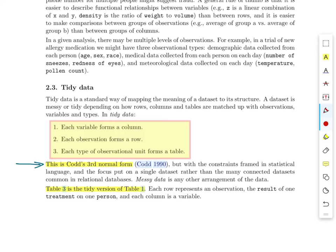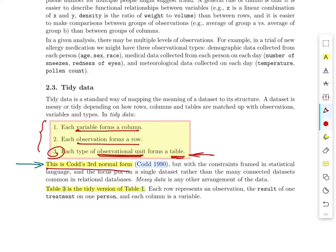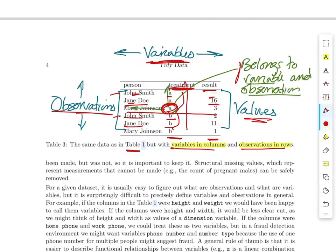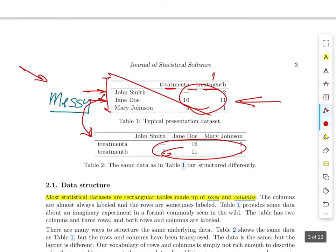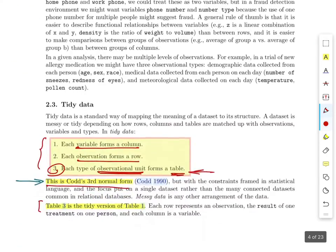Here are the three criteria Wickham defines to make tidy data: first, each variable forms a column; second, each observation forms a row; and third, each type of observational unit forms a table. This third criterion has more to do with normalizing the data in a database sense — he points out this is Codd's third normal form, basically. He concludes that table three — the tidied table — is the tidy version of what was originally proposed in table one. So table one is messy data; table three is tidy data, and that's what we're trying to get to.